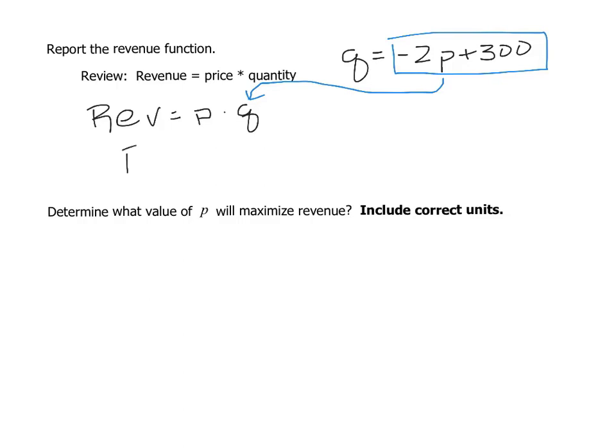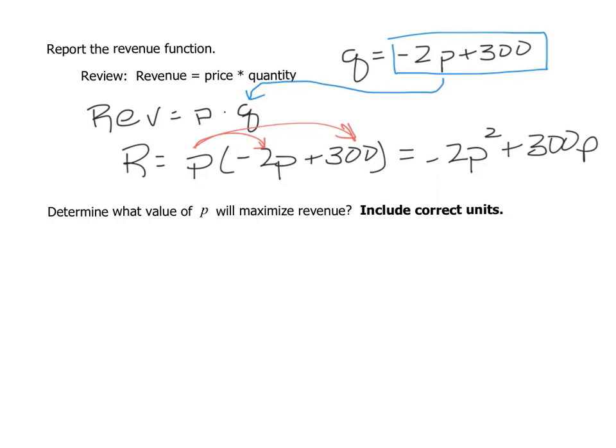So we're going to have revenue is P times negative 2P plus 300, and then if I distribute my P, I end up with the formula negative 2P squared plus 300P. Notice that I now have a quadratic formula for my revenue function.